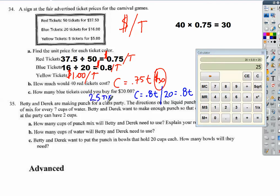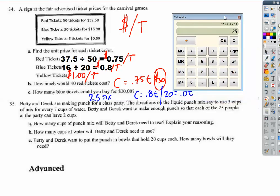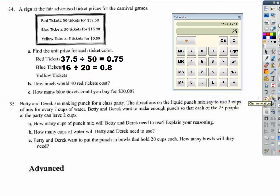So the Derek and Betty punch bowl thing, we did this in class, so I'm going to go over it very quickly. We have three cups of mix and seven cups of water for a total of 10 cups of punch. And we have 25 people. Each person gets two cups. So I need 50 total cups. So if each mix gets me 10 cups, 10 times 5 is 50 cups. So I need five batches.